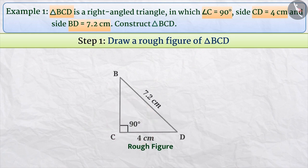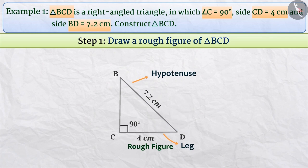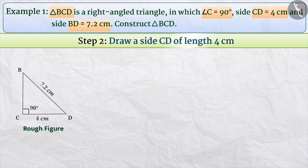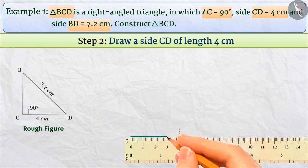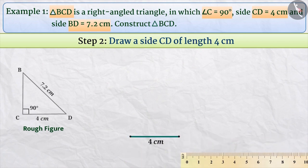From the rough figure, we come to know that in triangle BCD, side CD is the leg and side BD is the hypotenuse. Step 2: As given in the question, the length of side CD is 4 cm. So with the help of a ruler, we will draw a 4 cm long line segment. This line segment is the side CD of triangle BCD.